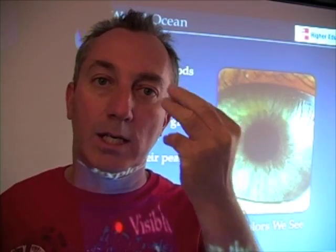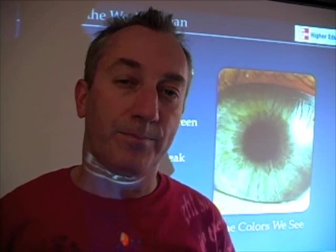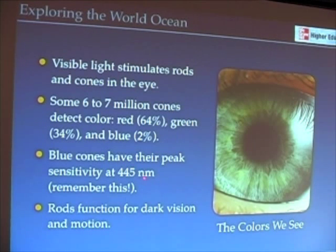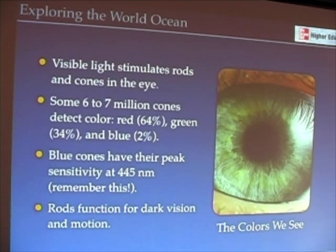It's that RGB in your eye that reproduces all the colors in the world that you see around you. Blue cones — the cells in your eye that detect blue color — are maximally sensitive at 445 nanometers. Remember this number: 445 nanometers. It's going to be an important number when we start talking about photosynthesis in the ocean. The rods in your eye function for dark vision, motion, and those kinds of things.